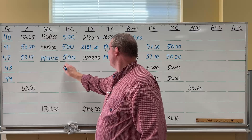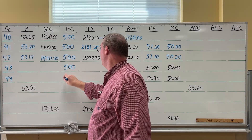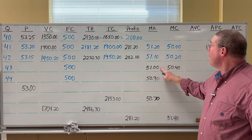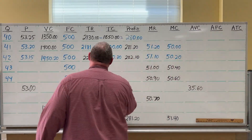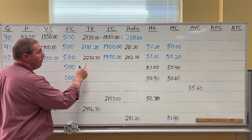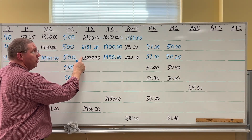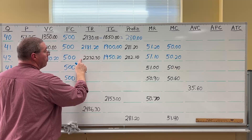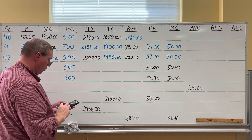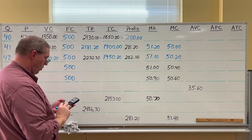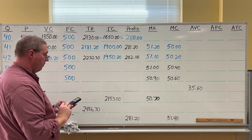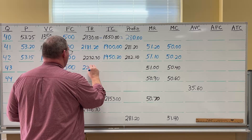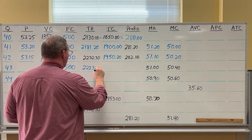Marginal revenue allows us to find the next total revenue. To find total revenue, we take the previous total revenue and add the marginal revenue. So we take $2,232.30 and add 51 — that gives us $2,283.30 for Q=43. Then we take $2,283.30 and add the marginal revenue of 50.90.